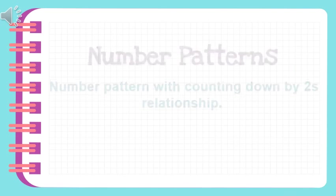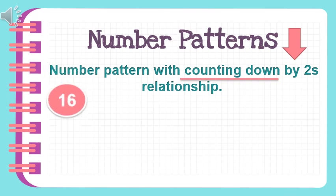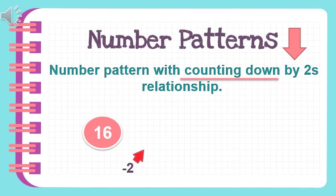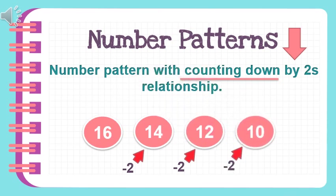Let's learn number patterns with a counting down by twos relationship. Let's start with number sixteen. When you say counting down by twos, meaning we're going to deduct or minus two. Sixteen minus two is fourteen, fourteen minus two is twelve, twelve minus two is ten. So sixteen will be decreased by two: sixteen, fourteen, twelve, and ten. This pattern is in descending order or counting down.